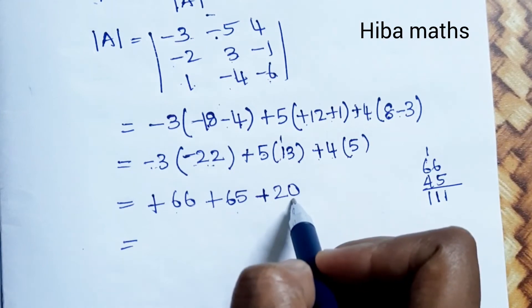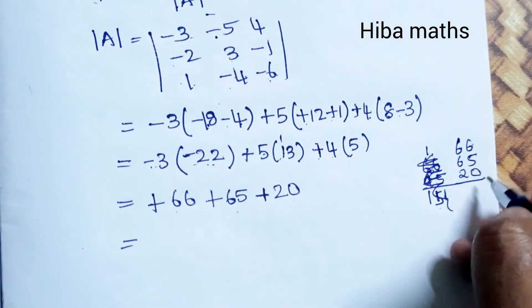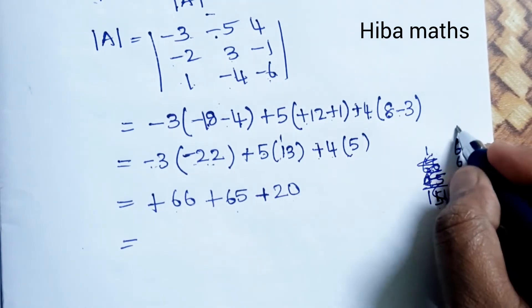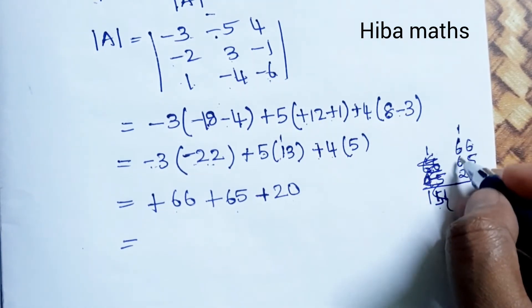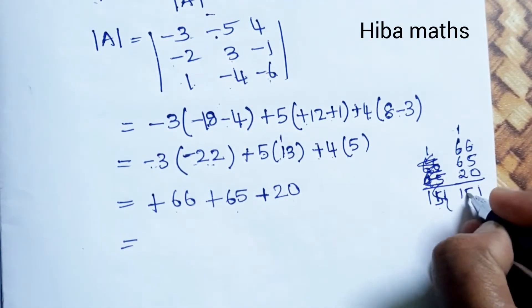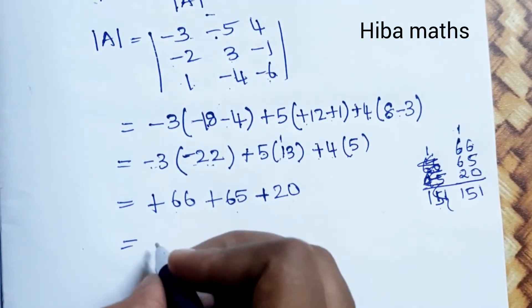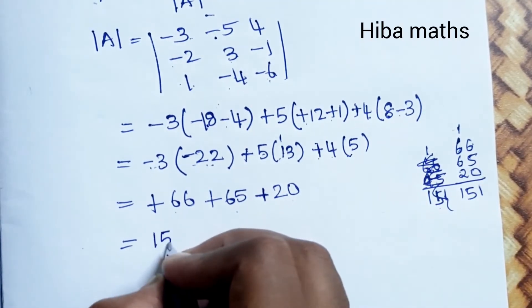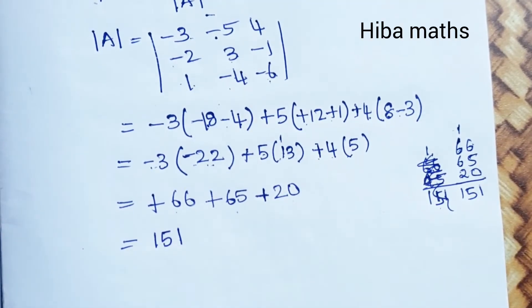So |A| = 66 + 65 + 20 = 151. This is the modulus of A value.